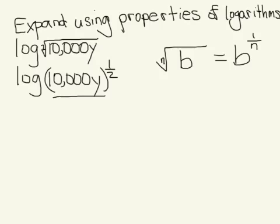So we haven't actually expanded yet, but now that it's in this form, it's much easier to expand because there's a property that says if you have a log with an argument that has a power on it, there's a power rule that says you can move the power to the front of the log. So what that'll look like is one-half times the log of 10,000y.